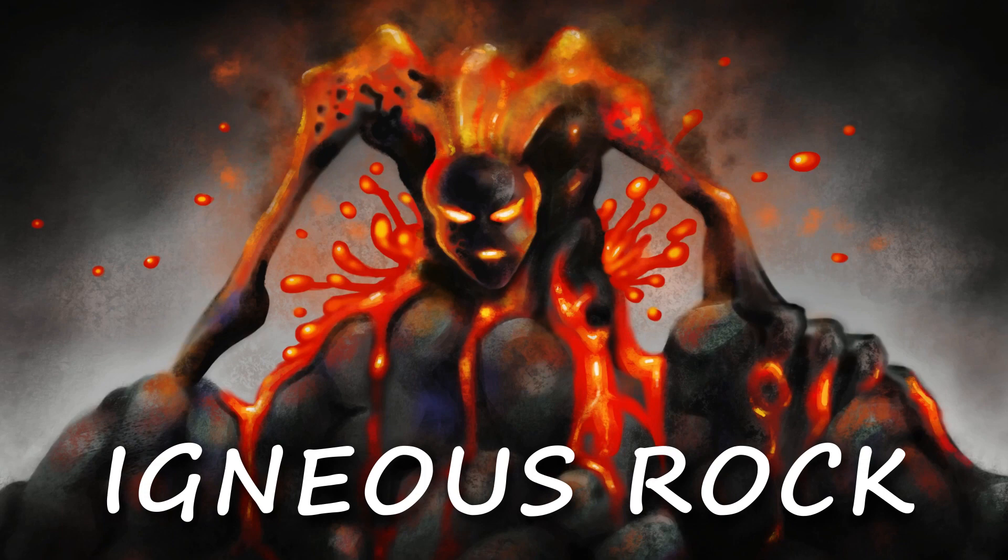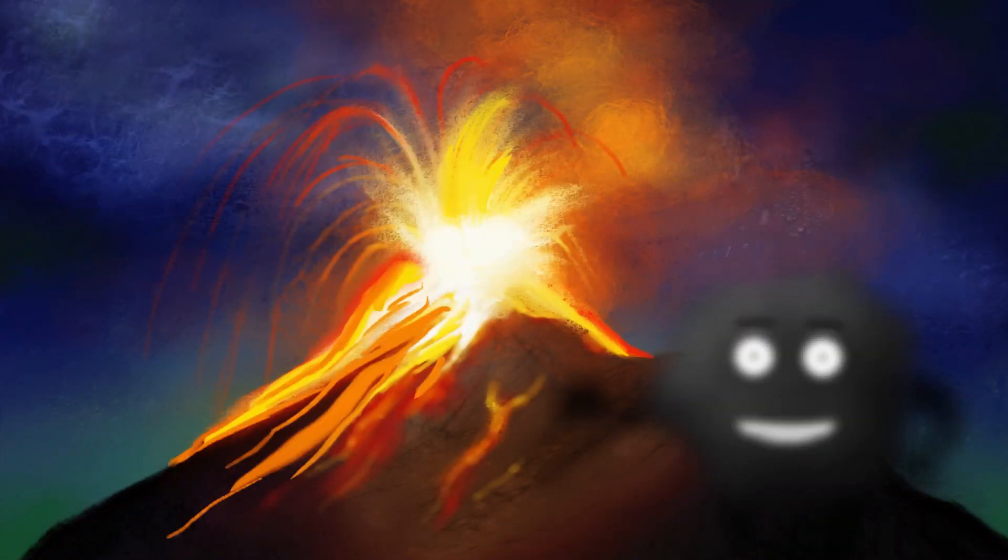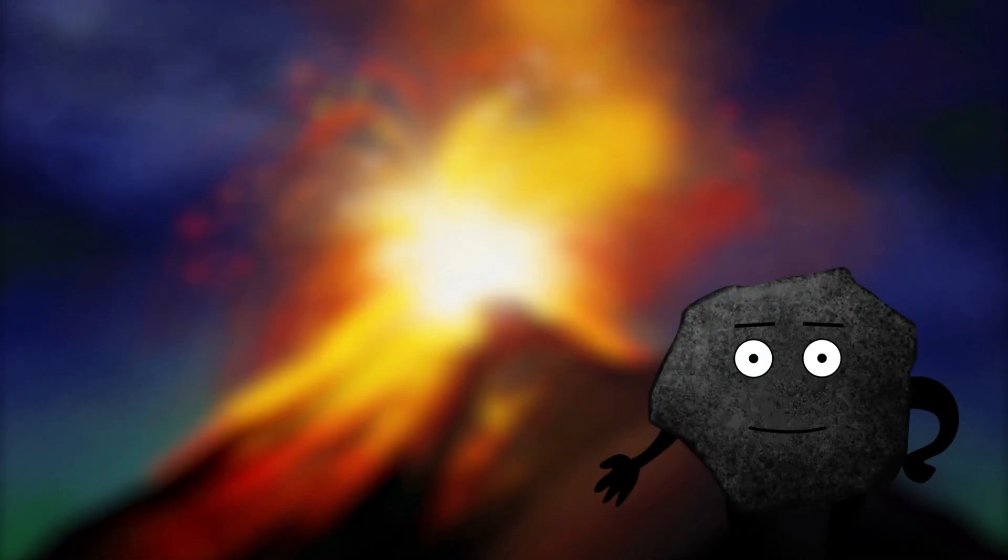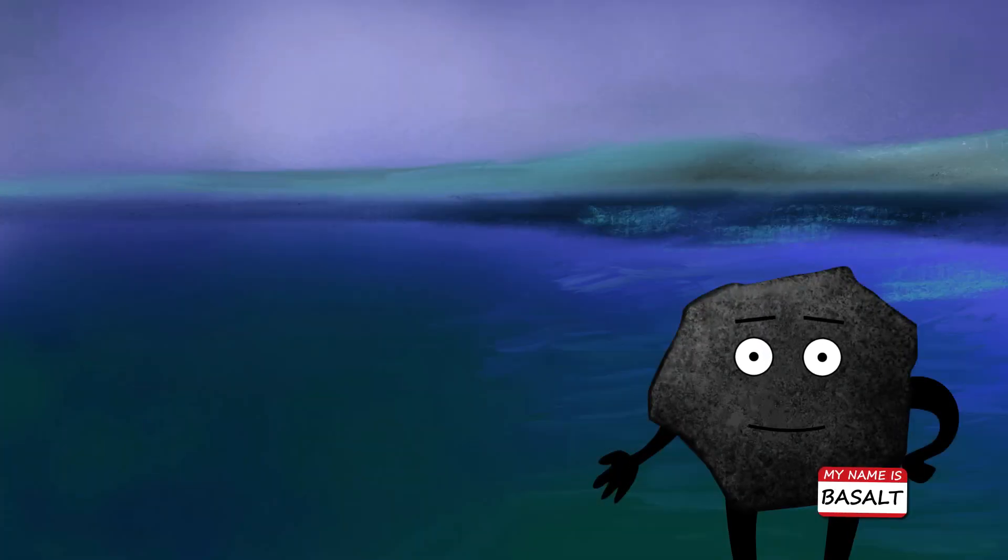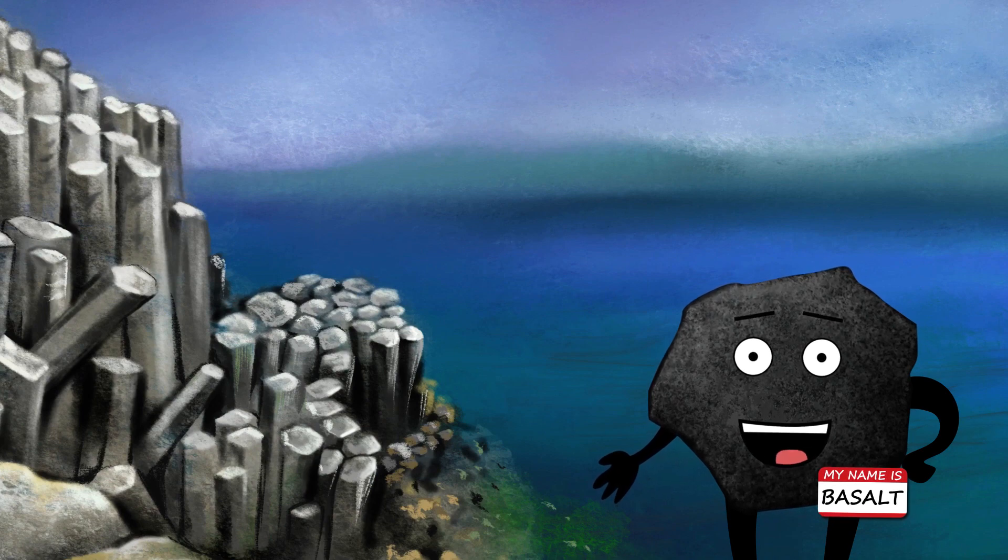Igneous rock forms when magma or lava cools and hardens. I am an igneous rock and I was born from a volcano. My name is basalt and I can form amazing structures as I cool, shrink, and solidify into rock.